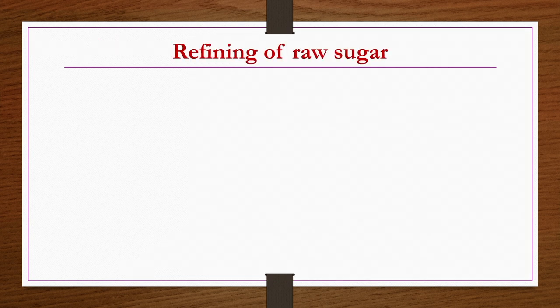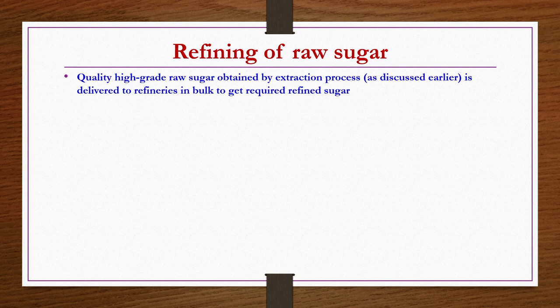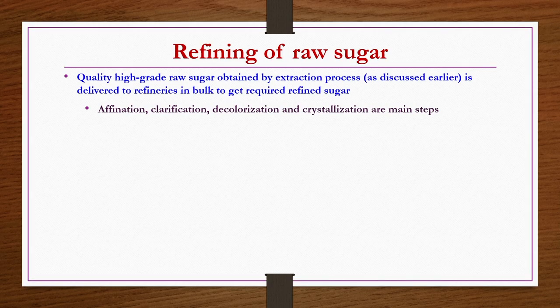Refining of raw sugar: high-grade raw sugar obtained by the extraction process is delivered to refineries in bulk to get refined sugar. In the refining of raw sugar there are several steps, which may be grouped as affination, clarification, decolorization, and crystallization. We will see each of them along with the flow sheet and respective descriptions.